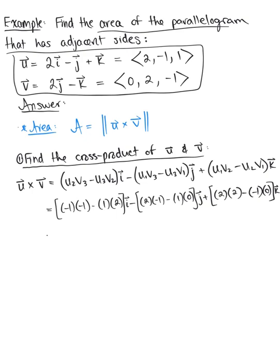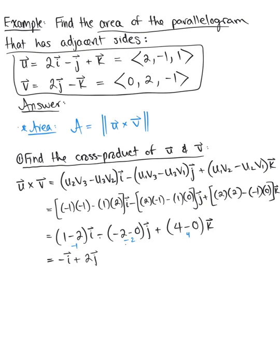Simplifying: (-1)(-1) is 1, minus 2, times unit vector i; minus (-2 - 0) times unit vector j; plus (4 - 0) times unit vector k. That leaves us with -1 times unit vector i, plus 2 times unit vector j, plus 4 times unit vector k.